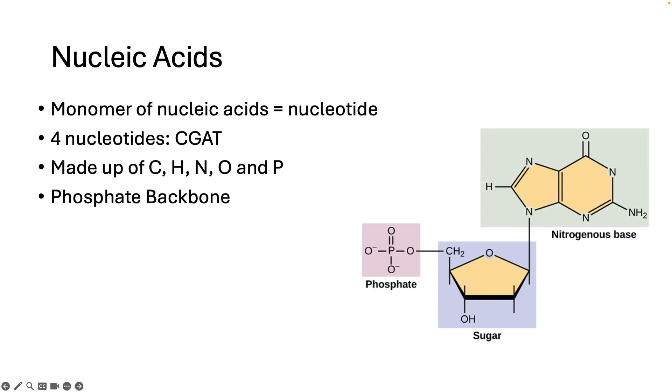Nucleic acids are made up of carbon, hydrogen, oxygen, nitrogen, and phosphorus atoms. We've seen most of these atoms before in amino acids, all except for phosphorus.